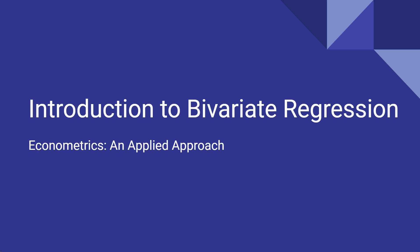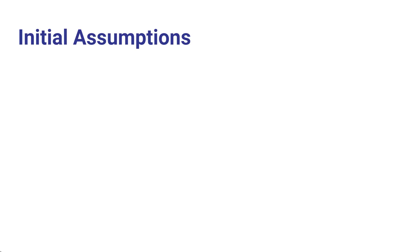In this video, we're going to introduce the basic bivariate regression model that we'll be building on for the rest of the course. Initially, we're going to make some simplifying assumptions about the relationship that exists between a variable we're trying to explain and some other variable that we're using to explain it.